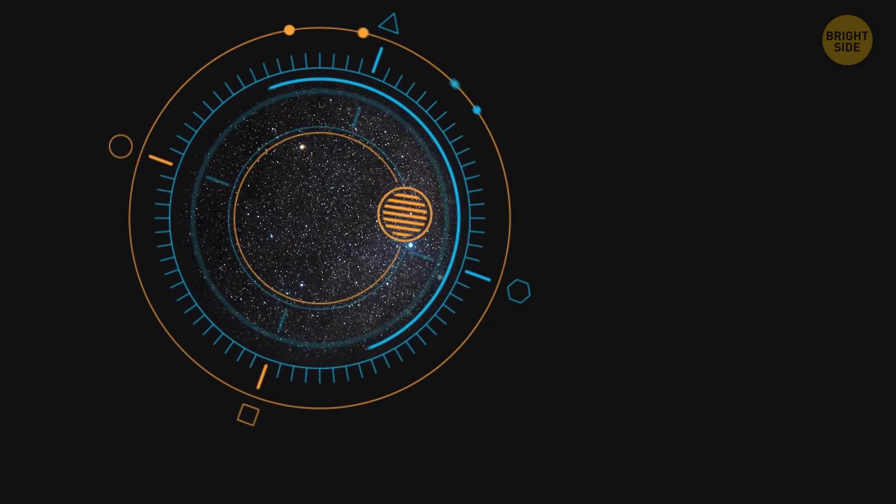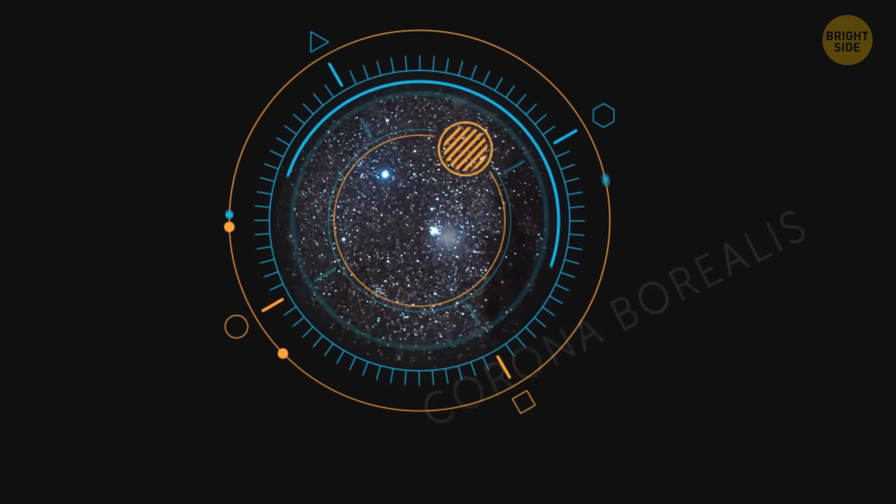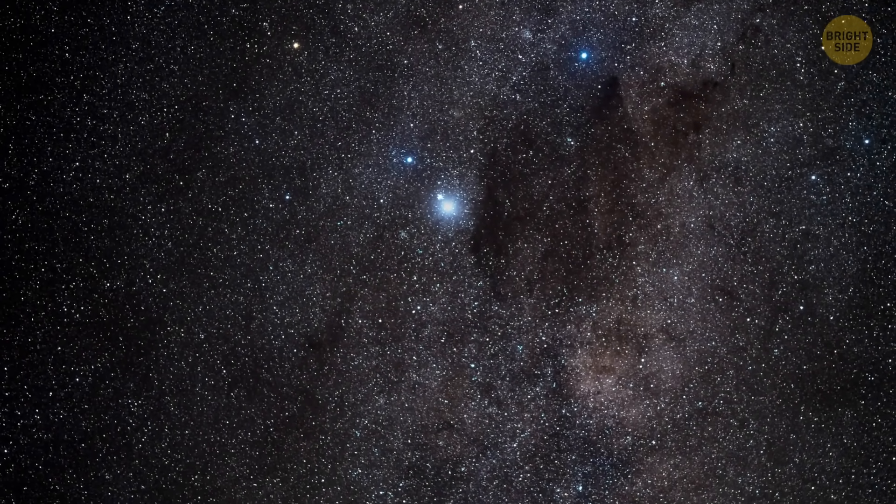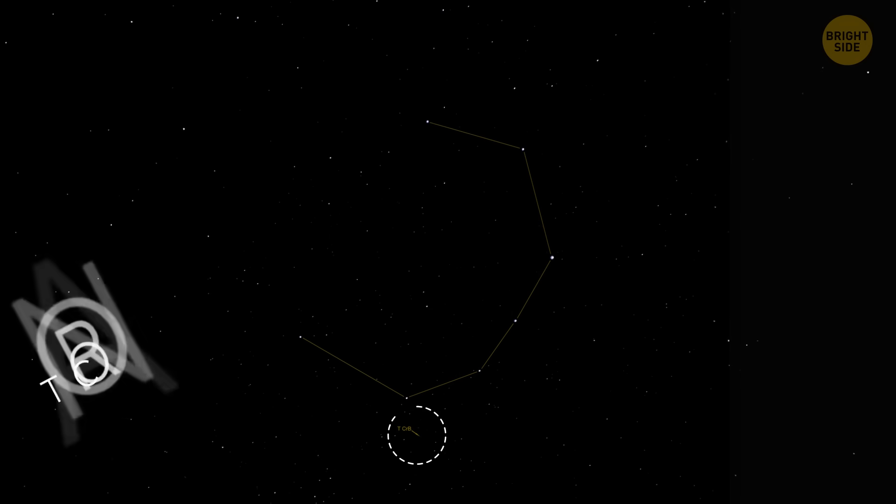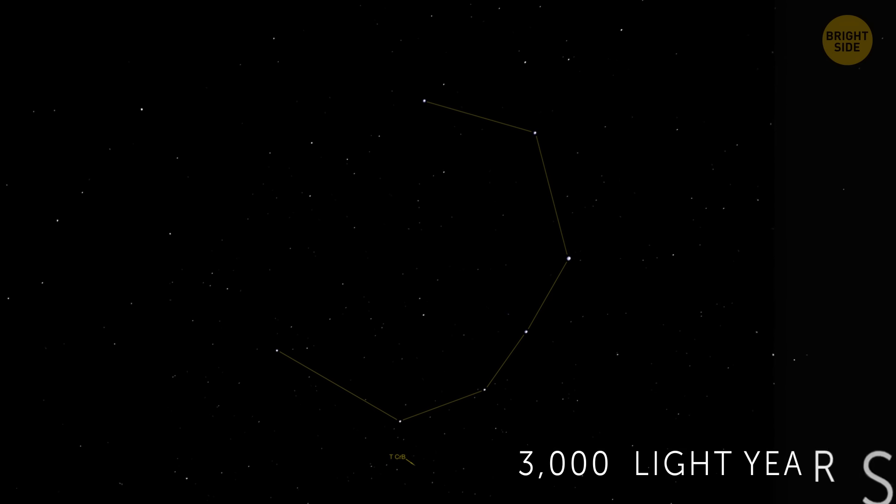So, this year, before September, a star in the constellation of Corona Borealis will explode, and in the Northern Hemisphere, we'll be able to see it with the unaided eye. The star is T Corona Borealis, a white dwarf star 3,000 light-years away from our solar system.